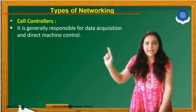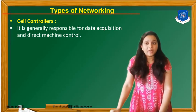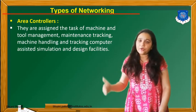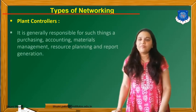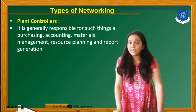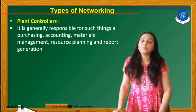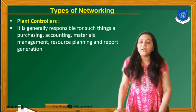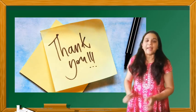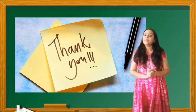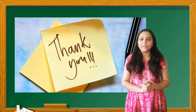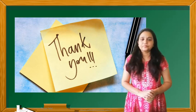Comparing industrial control levels with types of networking: cell control covers levels 1 and 2, level 3 corresponds to area control, and levels 4 and 5 are in the plant controller — responsible for purchasing, accounting, material management, and report generation. Thank you everyone. If you have any doubts regarding this topic, please contact me via email. Thank you.